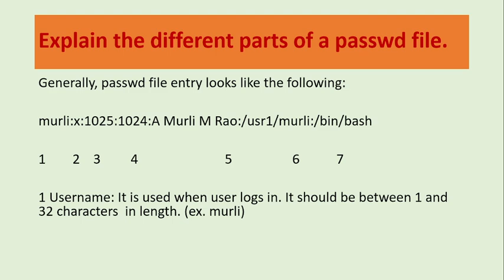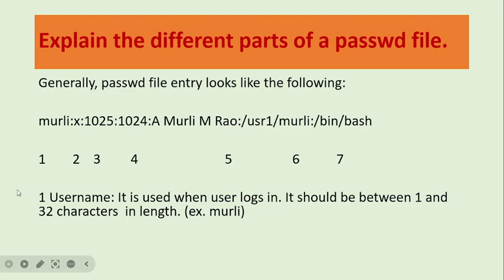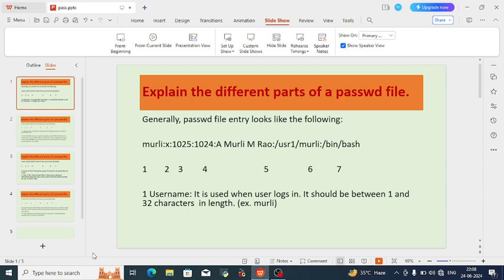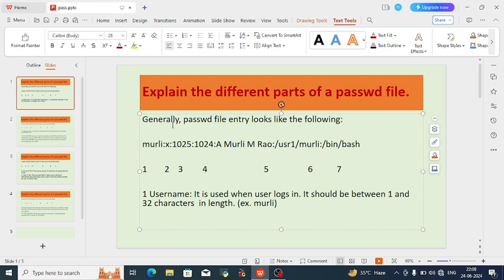The name has a length constraint. It should be between 1 and 32 characters in length. In 'Moodley', you can see how many characters are used — you can use a maximum of 1 to 32 characters. So 'Moodley' indicates field number 1, the username.